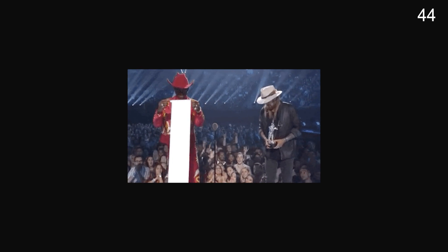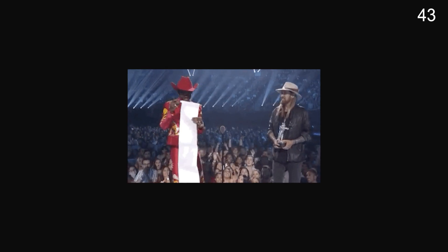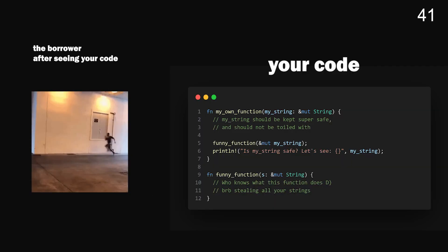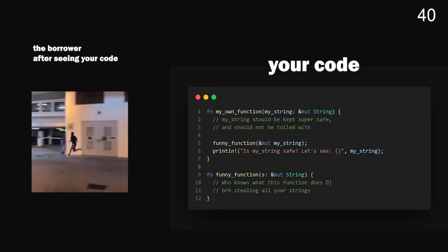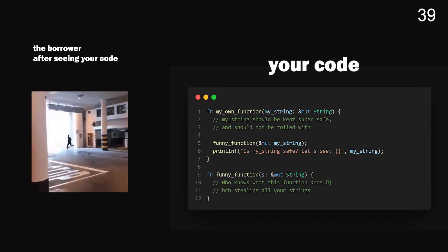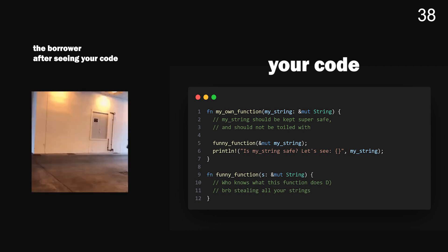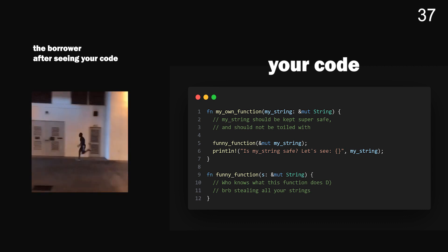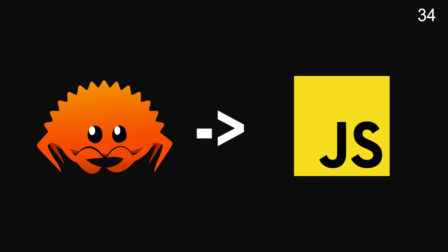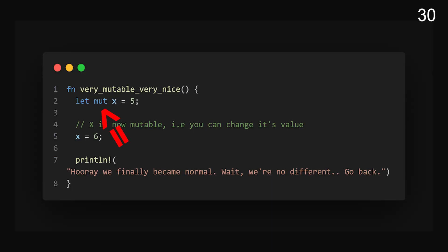But there are some rules to this loan giving. Rule number one: you must ensure the borrower isn't going to run away with the variable and use it in a way that could cause problems. Rule number two: you can choose to play with loans in mutable mode by simply adding the word 'mut' in front of it. This allows the borrower to play with the loan.